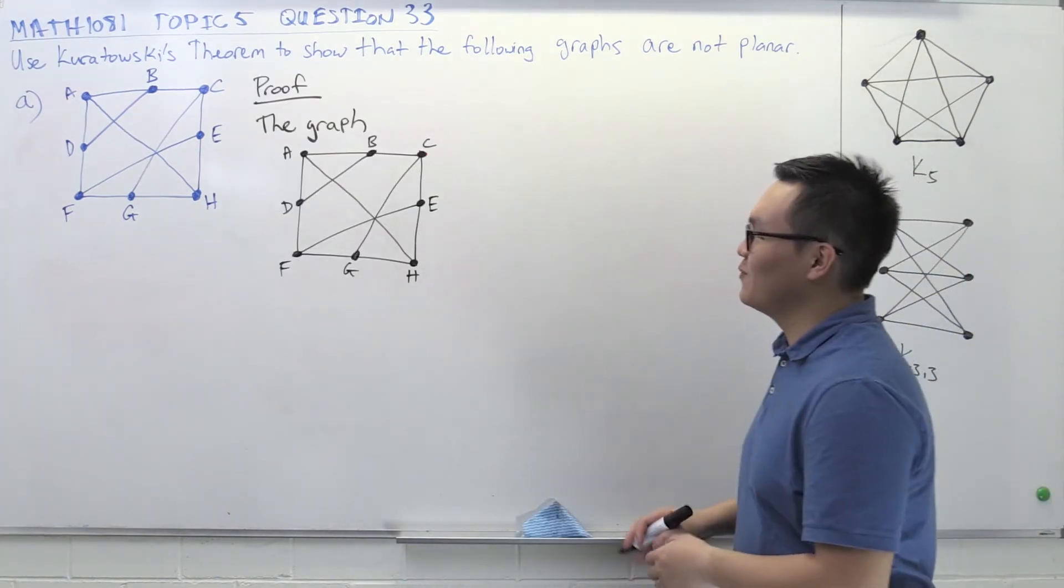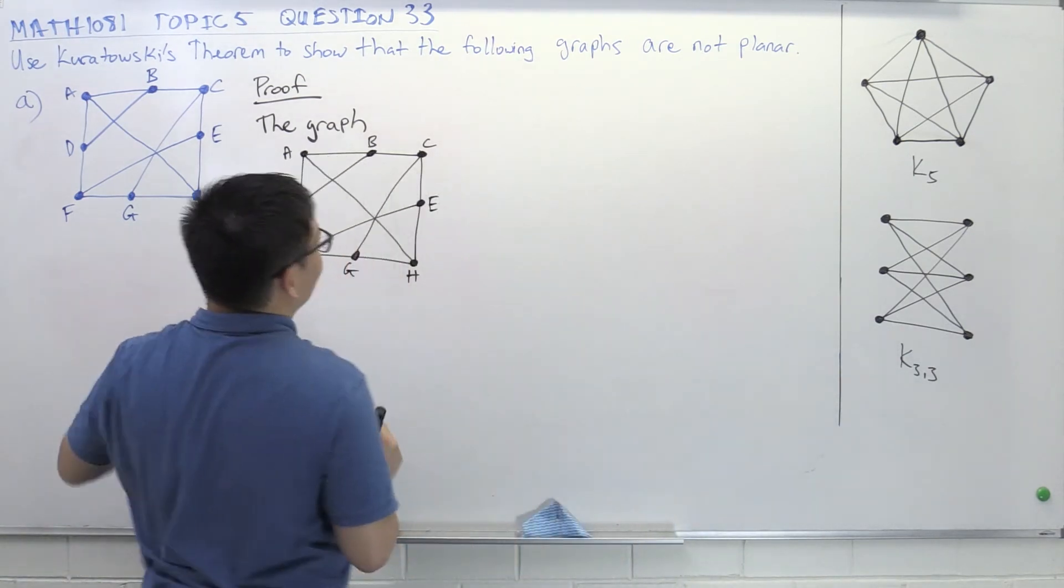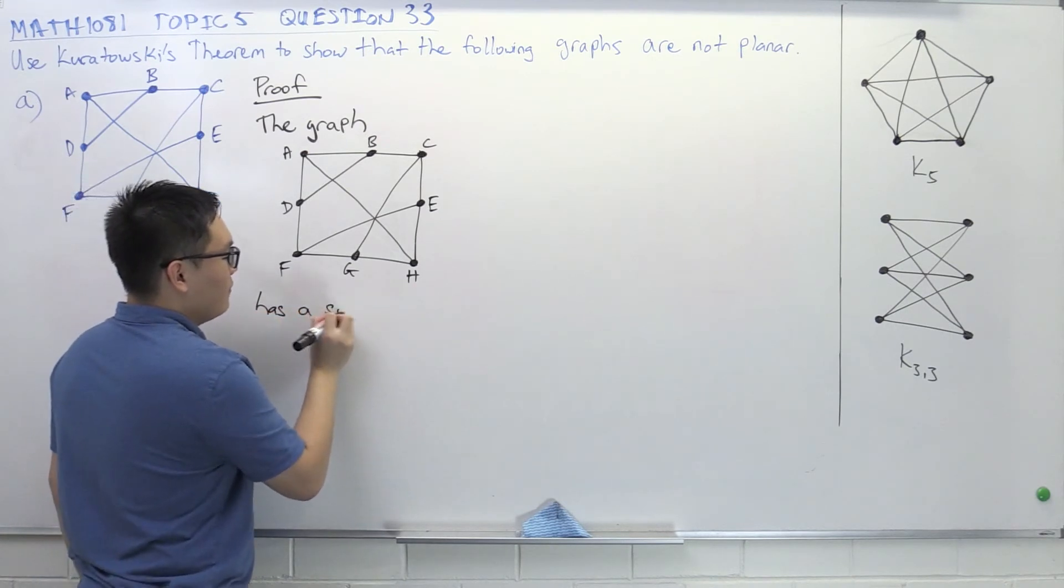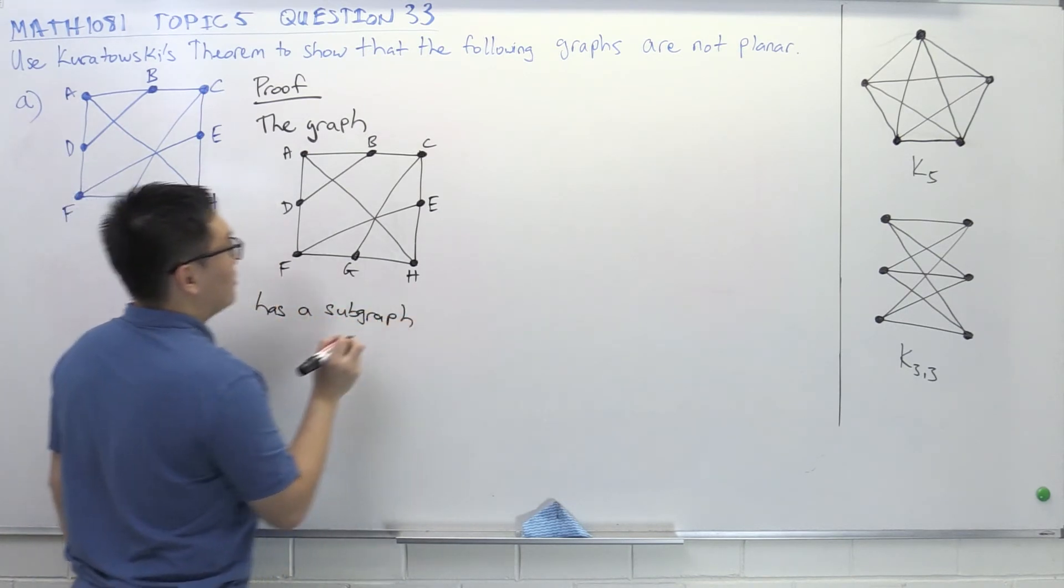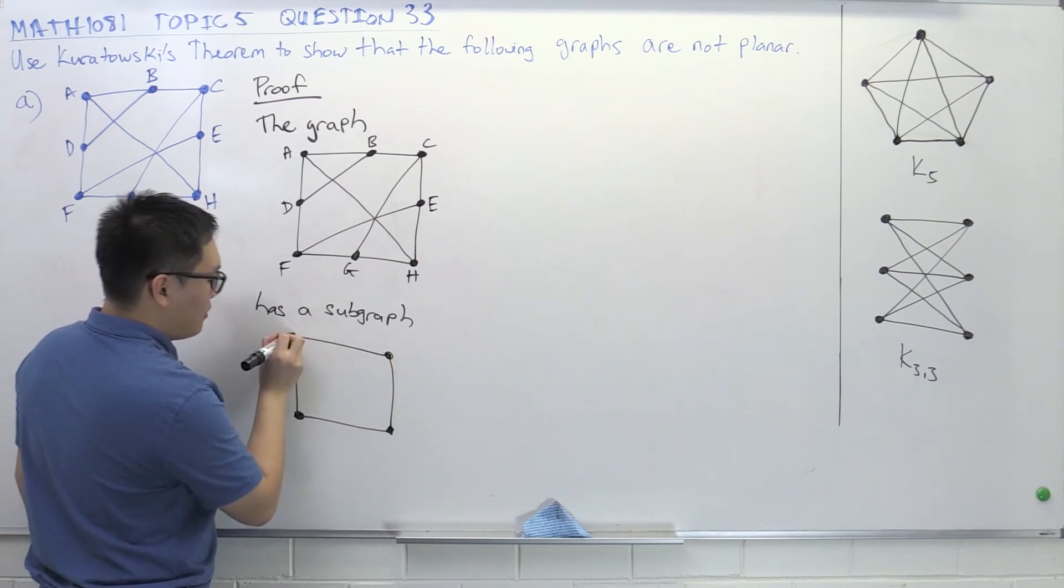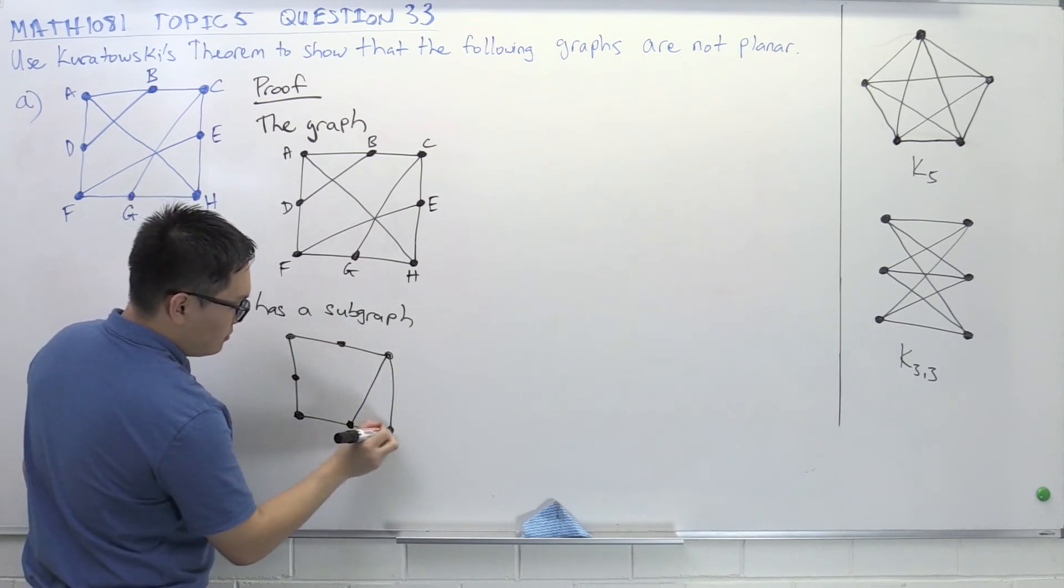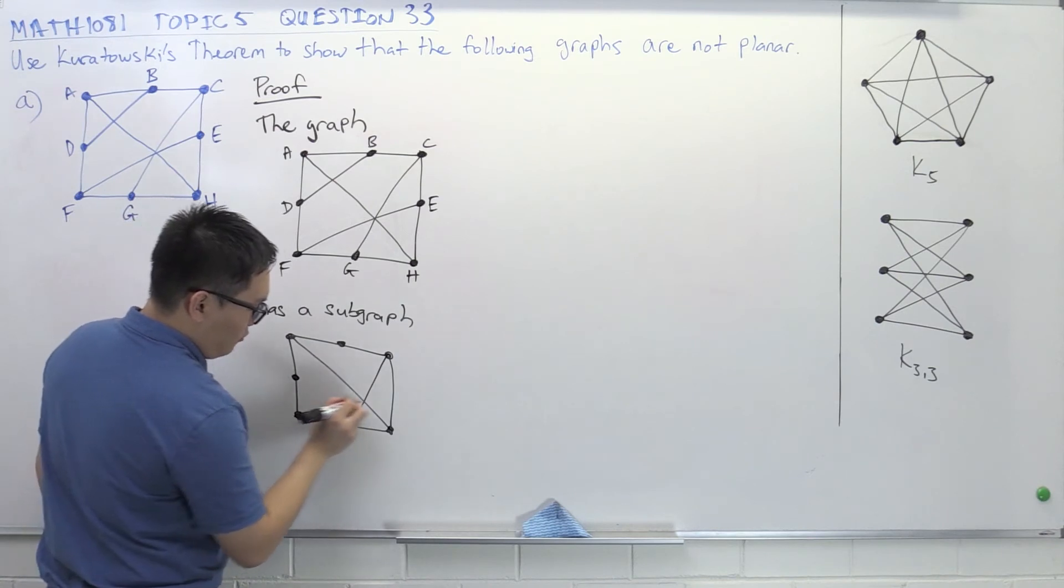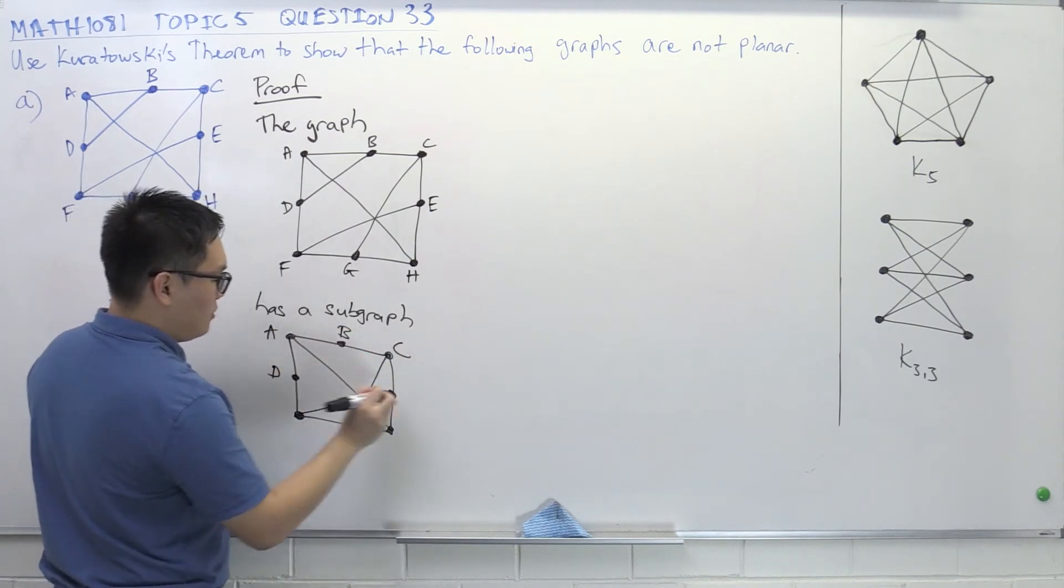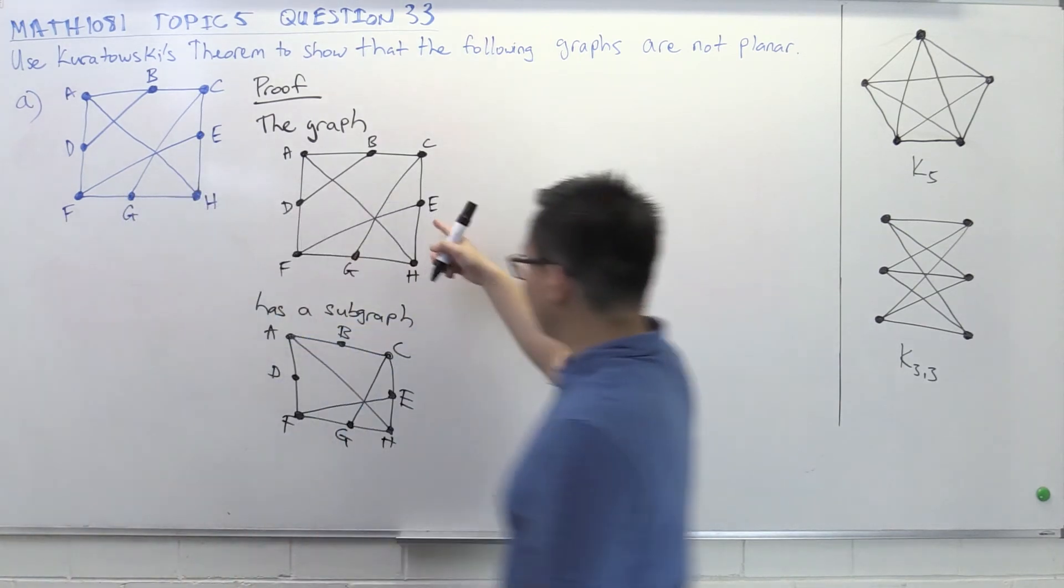Now it's finally time to write the proof. So proof. The graph, this is just the same graph. What was the first step? So the first step was that we removed the edge BD. Right? So the graph has a subgraph, which is the same graph without the edge BD. So I'm just going to quickly copy down the graph. Okay. Now I still need the vertices, but I don't add in the edge between them. And one more. Okay. So just also need to label the vertices F, G, and H. Okay. So this graph has a subgraph.